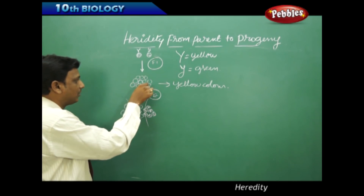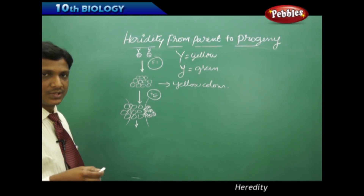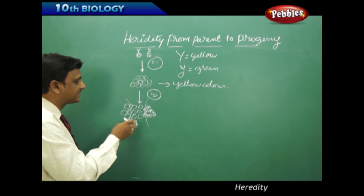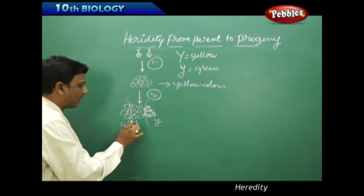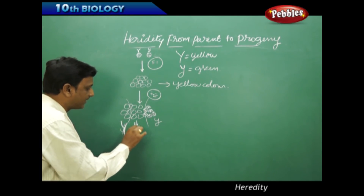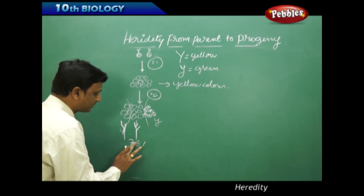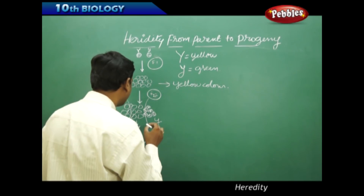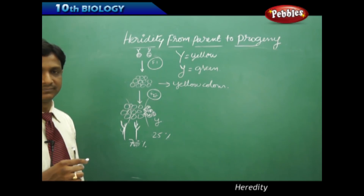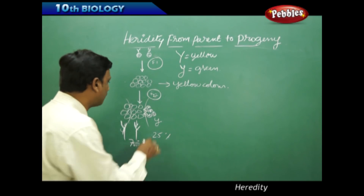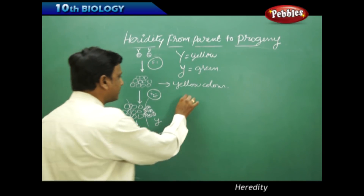That first generation is called F1. In the next generation, F2, these are self pollinated again. All the yellow color seeds are self pollinated. Due to this self pollination, the seeds obtained are few green and few yellow. Among these, 75 percent are yellow in color and 25 percent of the seeds are green in color.